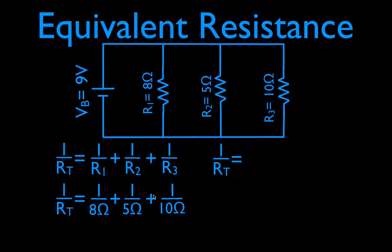I get that 1 over RT is equal to 0.425. Now, it is important to notice that this is not the equivalent resistance, this is 1 over the equivalent resistance. So now, in order to solve for RT, not 1 over RT, but in order to solve for RT, we need to take the reciprocal of both sides of our equation.